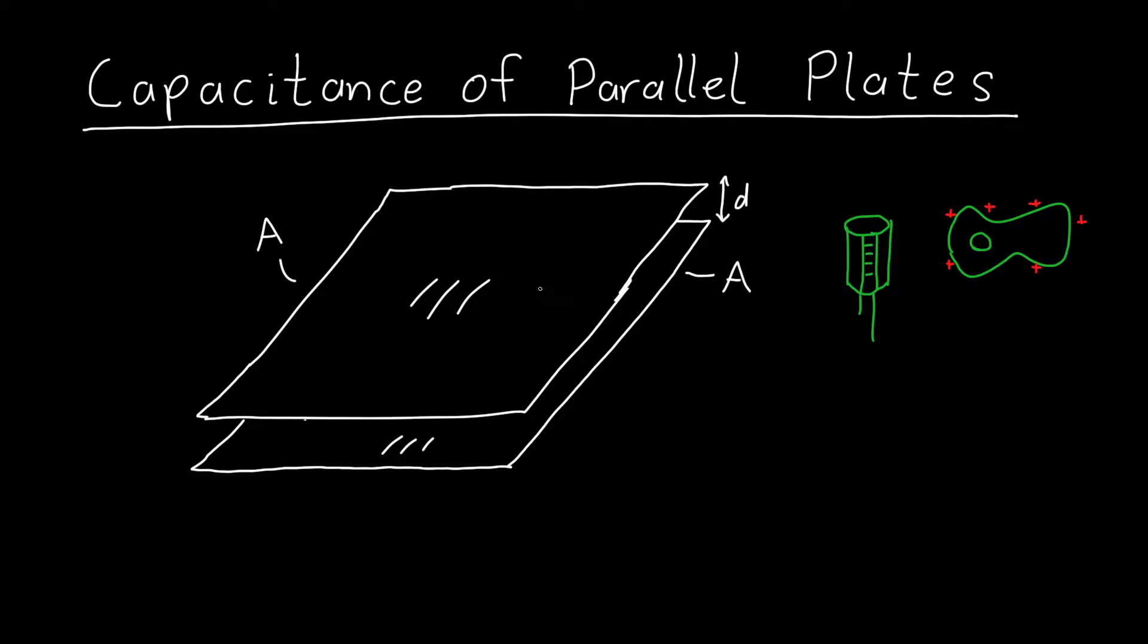And so the setup for this problem is that you've got two metal plates or two conducting plates that are separated by a distance D and they have a total area A. And importantly this distance D is much smaller than the linear dimension of the capacitor, so the length or the width of that capacitor. And this allows us to treat something with finite area as if it were a set of infinite plates. So we can use all of our favorite formulas for infinite objects.